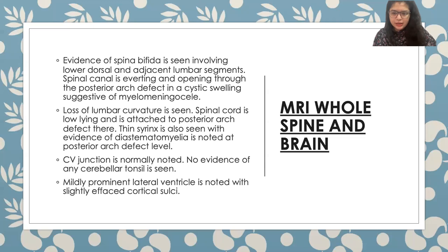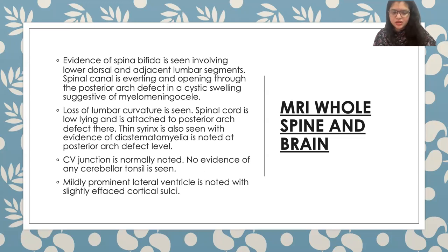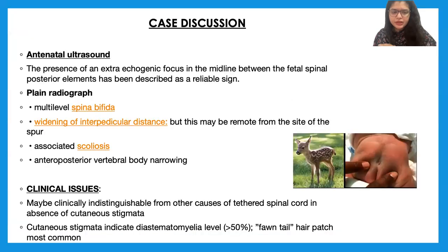MRI was reported as showing spina bifida involving the lower dorsal and adjacent lumbar segments. The spinal cord is everting and opening through the posterior defect into a cystic swelling, suggestive of myelomeningocele. Loss of lumbar curvature is noted, the cord is low-lying and attached to the posterior aspect, and a syrinx was also present. The craniocervical junction was normal with no cerebellar abnormality.